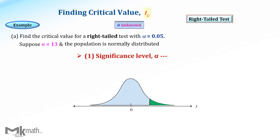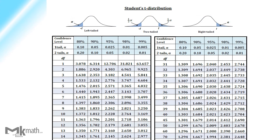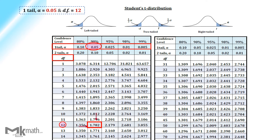Step 1: identify the significance level 0.05 as one-tailed alpha. Step 2: find the degrees of freedom by subtracting one from the sample size 13, which is 12, then look up the table. First, locate 12 degrees of freedom, then select 0.05 from the one-tailed alpha row. The intersection of those is the t-score 1.782.